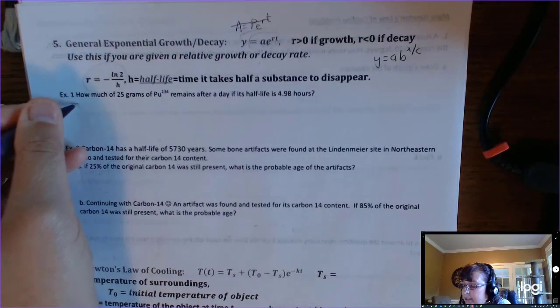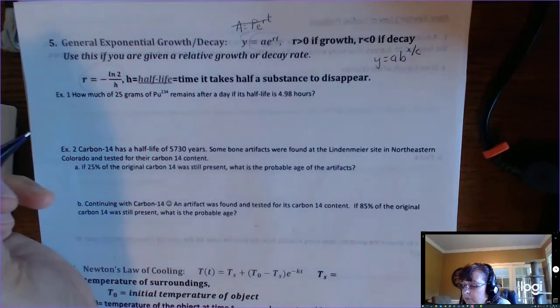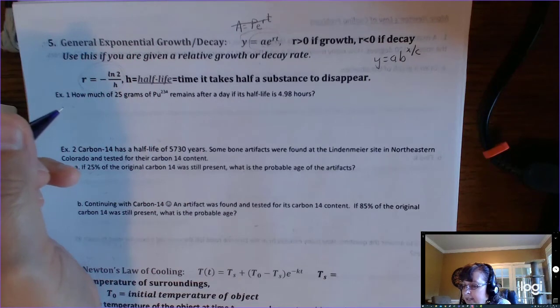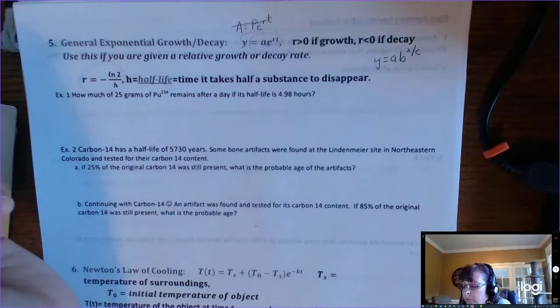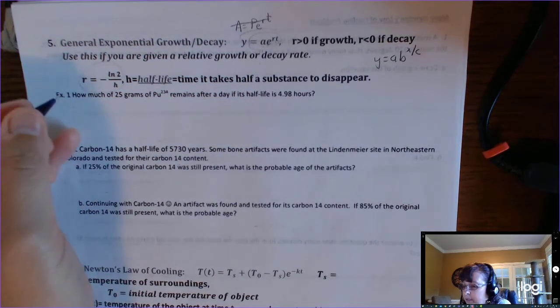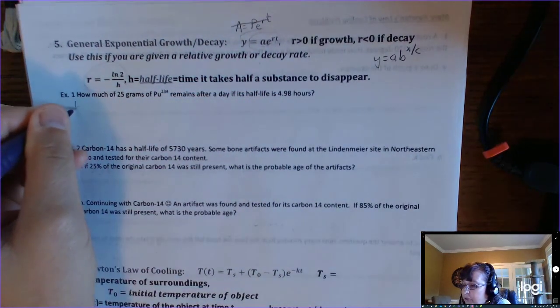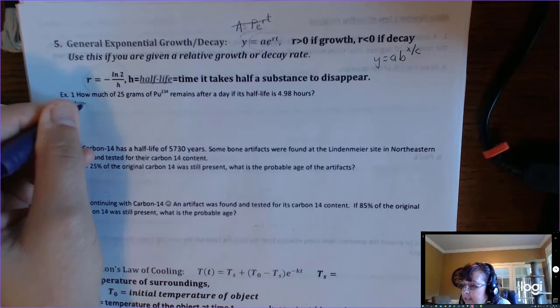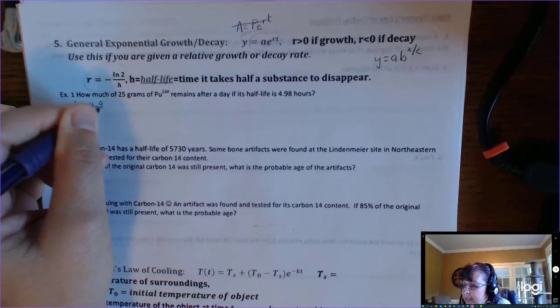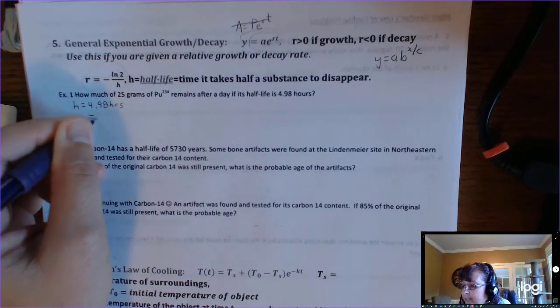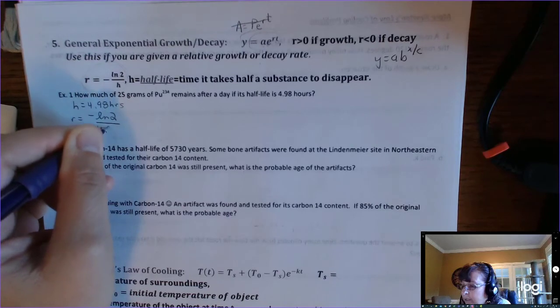So, example one, how much of 25 grams of PU-234, just an element, remains after a day if its half-life is 4.98 hours? So I'll do it both ways. Okay, so half-life is 4.98 hours. That means your H is 4.98 hours.